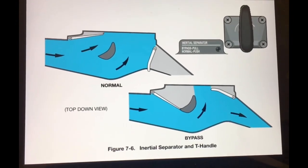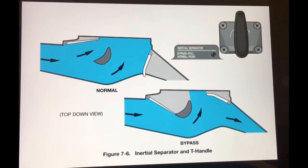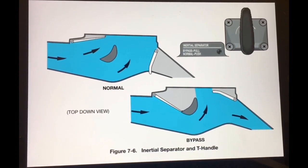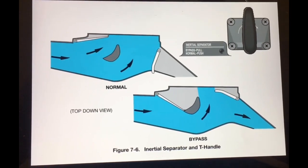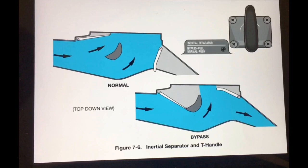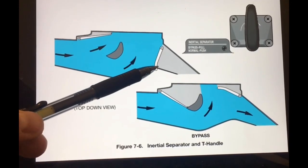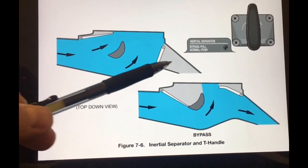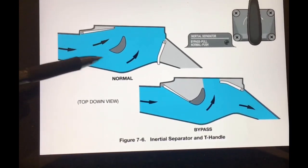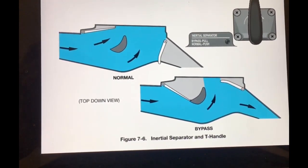This is a drawing of the inertial separator system on the Cessna 208, also known as a Caravan. In the first position, the handle is in the normal position. It has a vane that blocks that air outlet. This is the air inlet—it makes an easy turn and goes directly into the engine. All the air gets into the engine, none goes overboard.